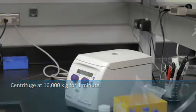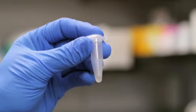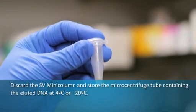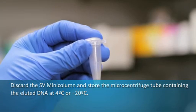Discard the SV mini column and store the microcentrifuge tube containing the eluted DNA at 4 degrees Celsius or minus 20 degrees Celsius.